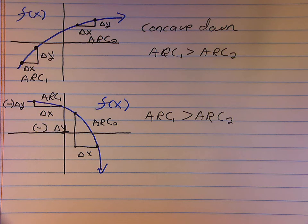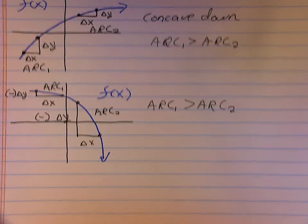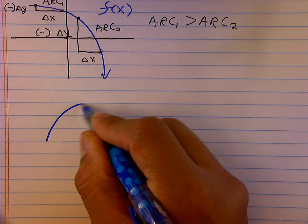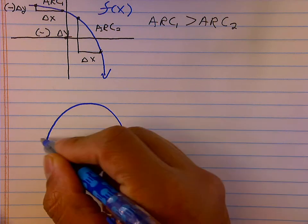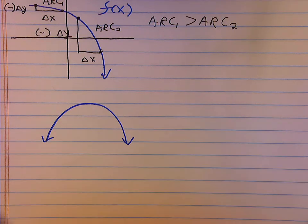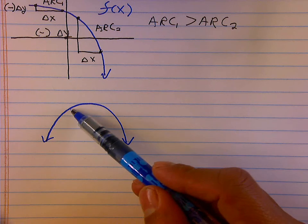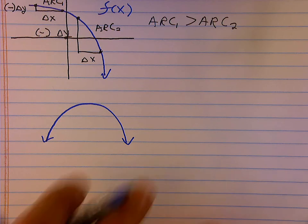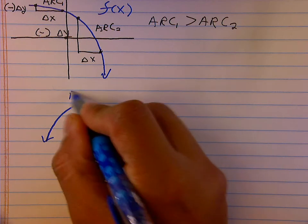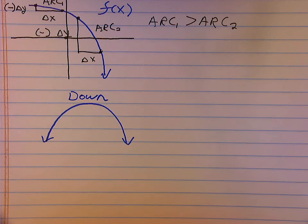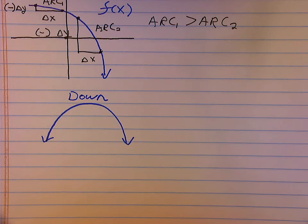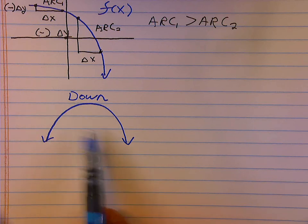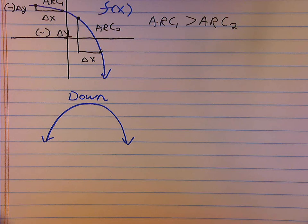An easy way to help you remember this: if you are anywhere on a graph and the graph appears to be part of a frown, whether you're increasing or decreasing, if you are on part of it that looks like a frown, you are concave down. A little thing to help you remember: when you're concave down, you want to frown.